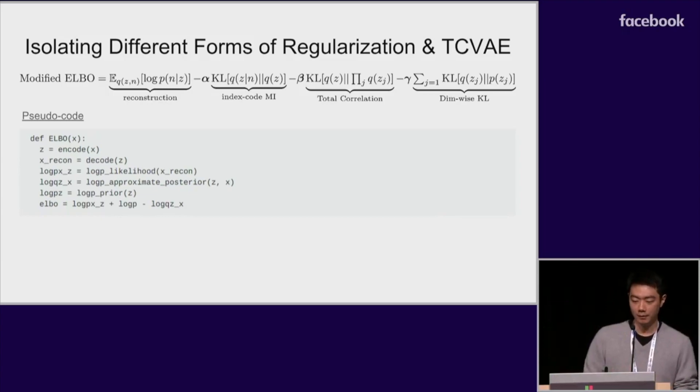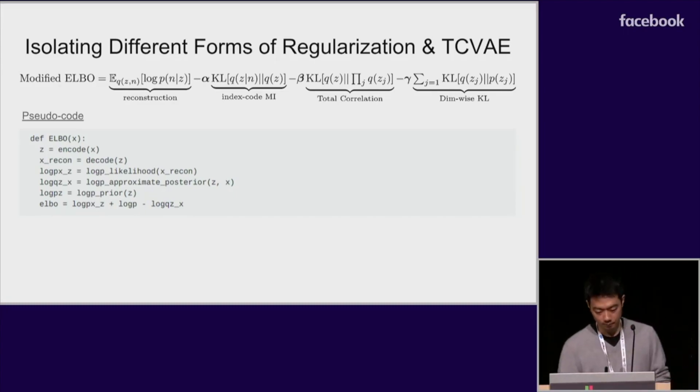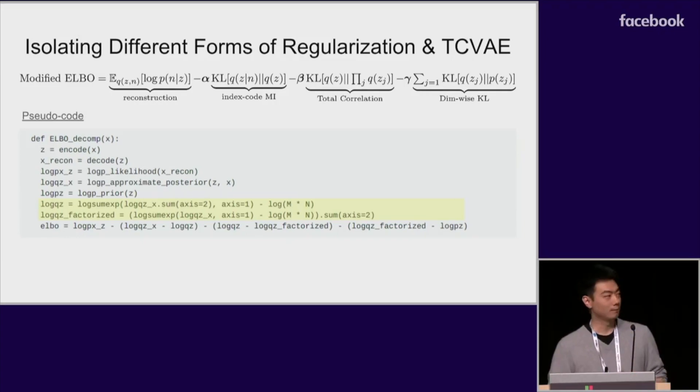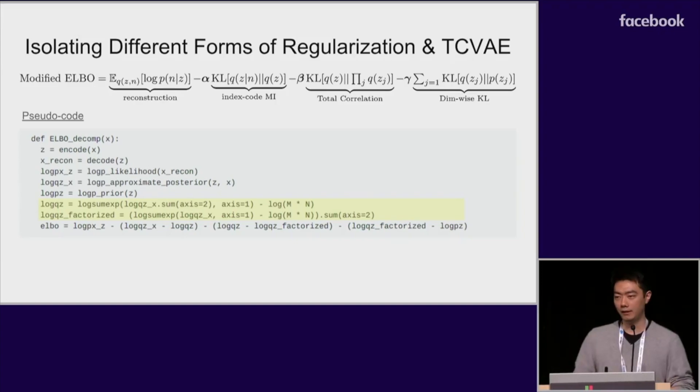With this, we can now set arbitrary weights on the individual terms in our decomposition. This lets us isolate and amplify the different forms of regularization that were already present in the ELBO objective, depending on what properties we want the model to have. In pseudocode, the standard ELBO can be estimated like so. Instead, to obtain the terms in the decomposition, only a very simple modification is required to any standard ELBO estimation code. The simplicity of this approach means that it can act as a drop-in replacement for any ELBO-based algorithm. Once the terms are estimated, we can assign a large penalty to the total correlation to learn a factorized representation while keeping the other weights at one. And we call this algorithm the TCVAE.